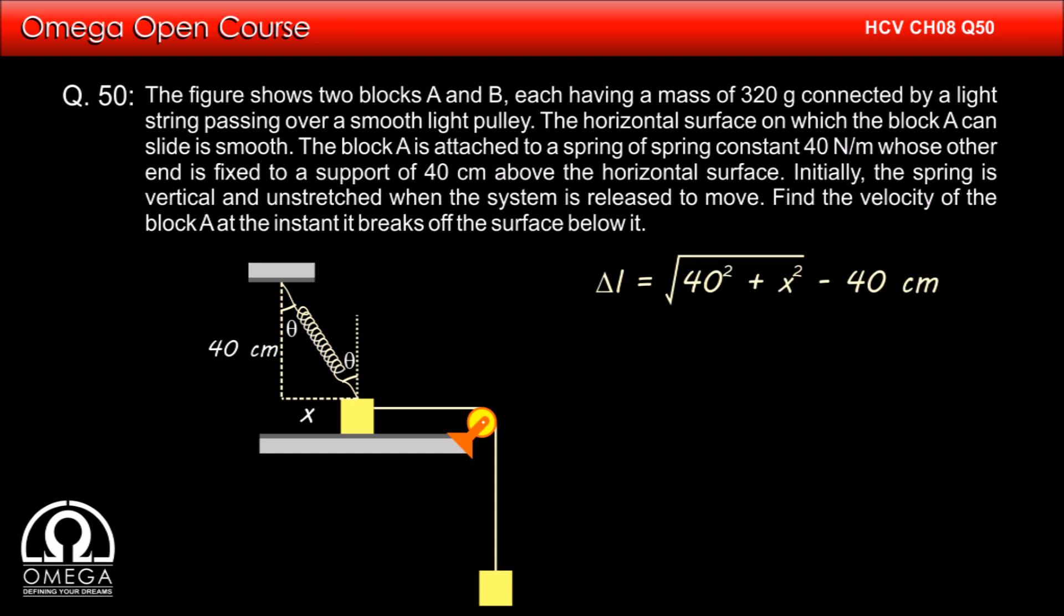From Pythagoras theorem, the final length of the spring will become root under 40 square plus x square. Therefore, the elongation in the spring delta L is equal to root under 40 square plus x square minus 40.